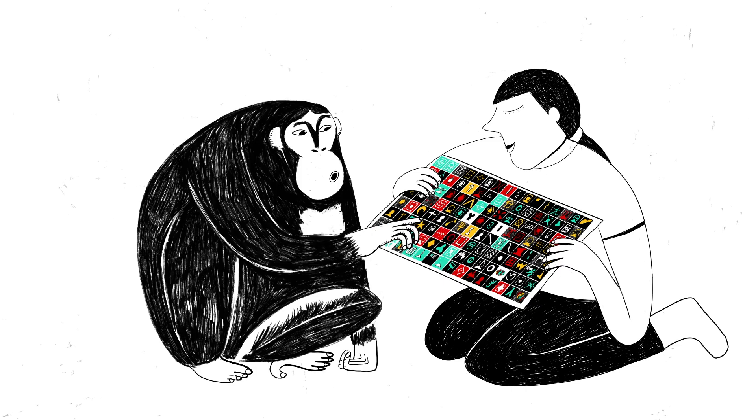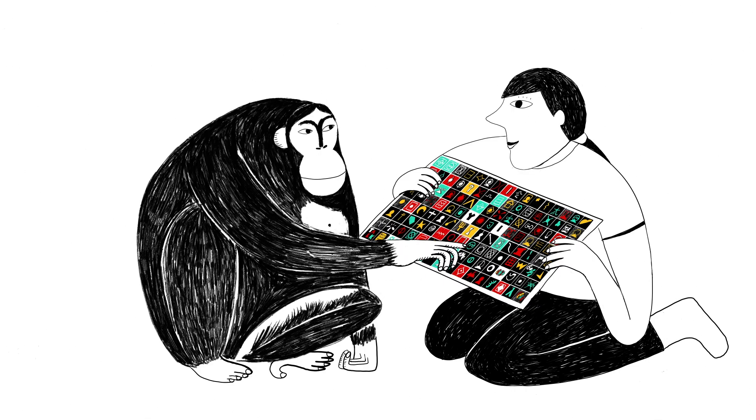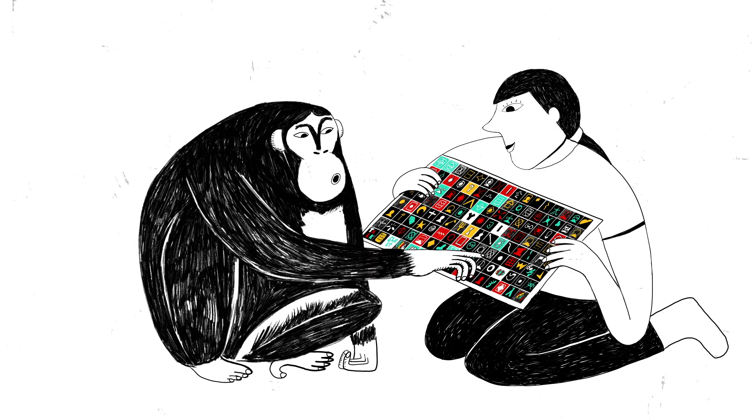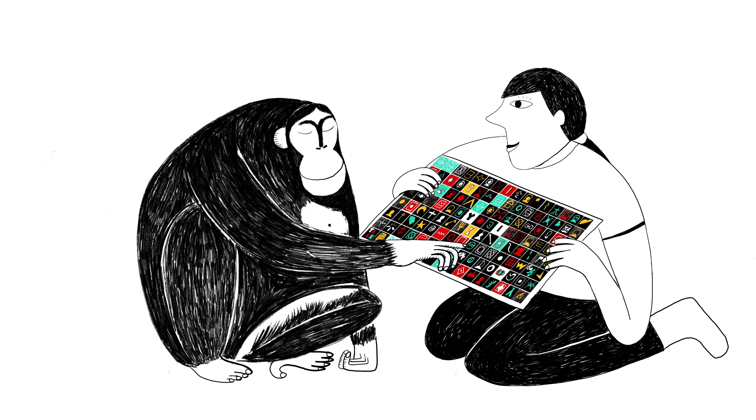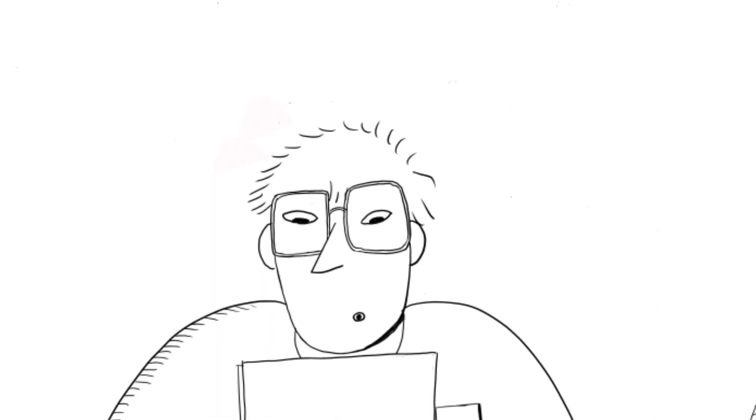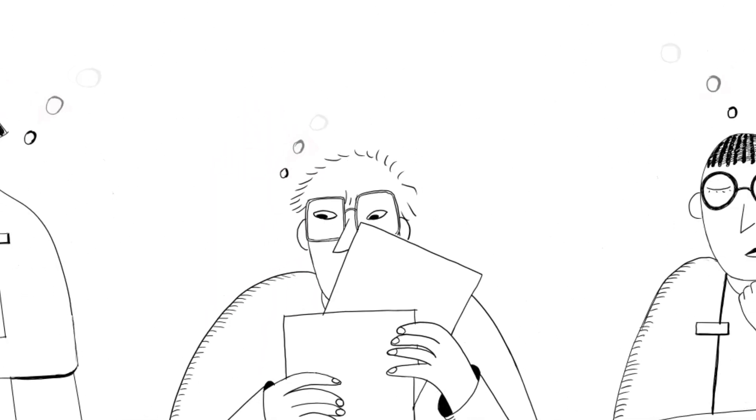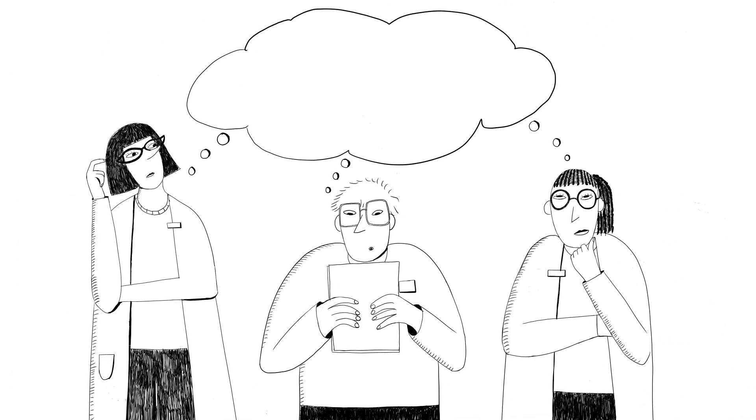By pointing to several of these in order, he created sequences to make requests, answer verbal questions from human researchers, and refer to objects that weren't physically present. Kanzi's exploits ignited immediate controversy over one question: Had Kanzi learned language?